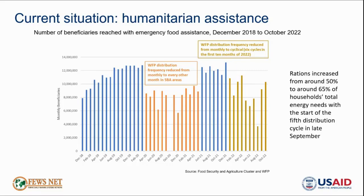However, beginning in the fifth distribution cycle starting in late September, WFP slightly increased ration sizes again, with most beneficiaries now expected to be receiving 65% rations per distribution. Overall, both distribution frequency and ration sizes per distribution are currently lower compared to the monthly distributions of 80% rations that many households had been previously receiving for years and come to depend on. Given the highly limited ability of most households to expand income earning to compensate for this reduction, and given already highly eroded coping capacity, these assistance reductions alongside rising prices are expected to be resulting in a growing number of households facing food consumption gaps or widening consumption gaps.